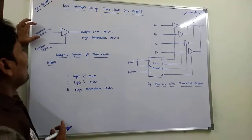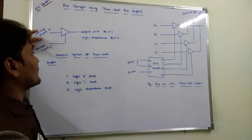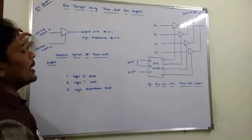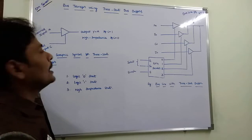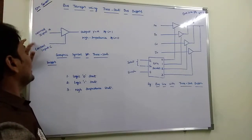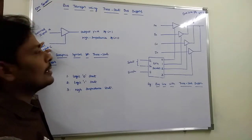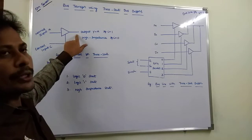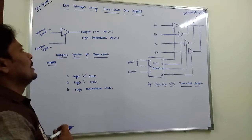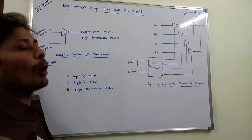The block diagram of the three-state gate is shown in the figure. It consists of two inputs: one is the normal input, represented by letter A, and the second input is the control input, represented by letter C. There is one output, denoted by Y. The control input determines the output.